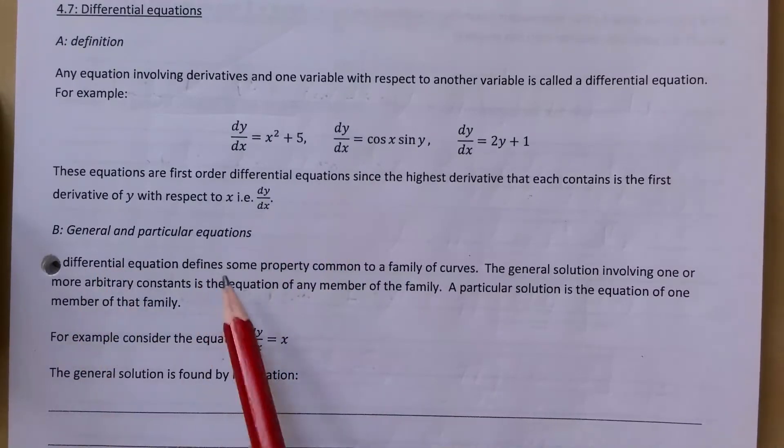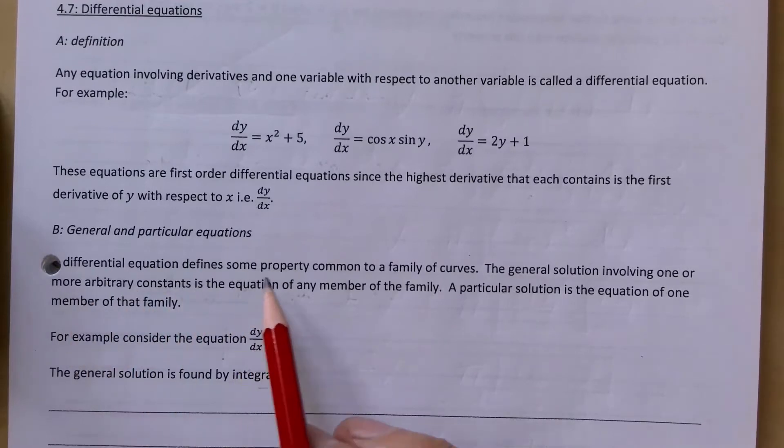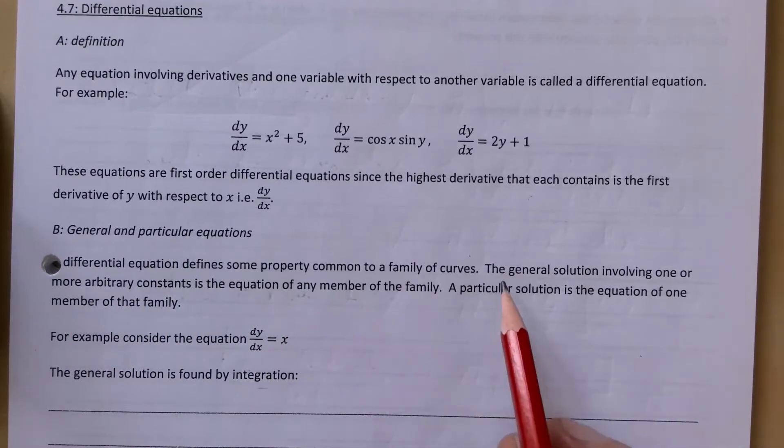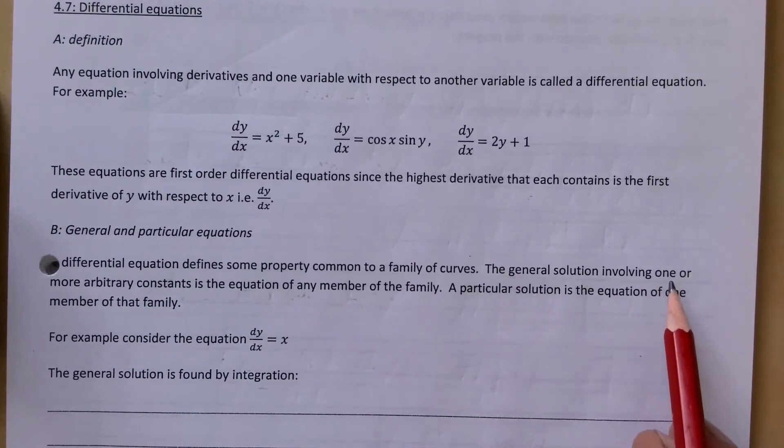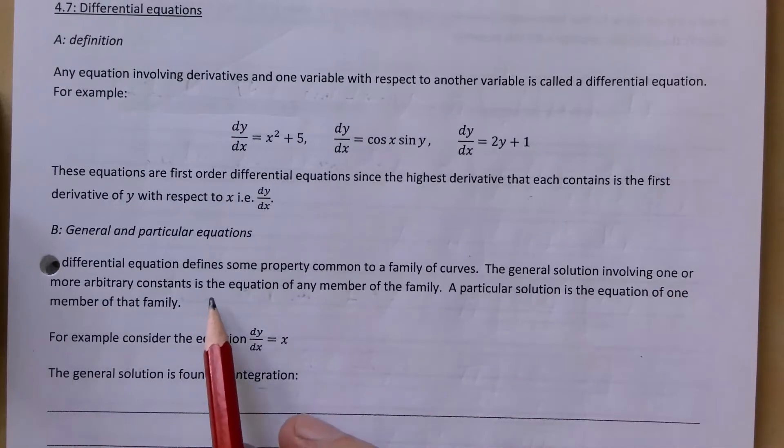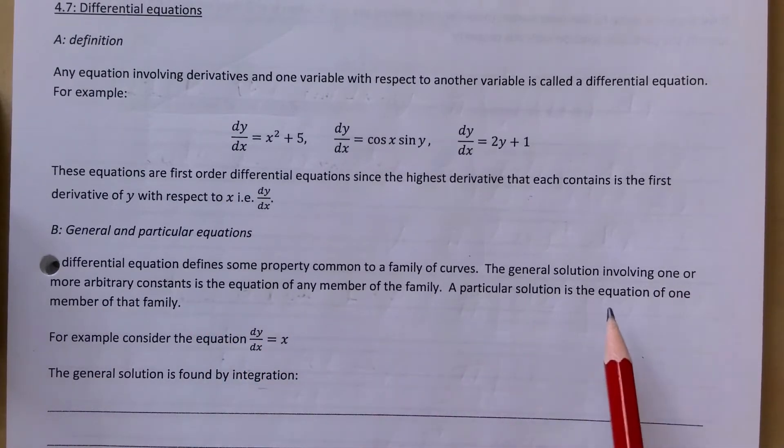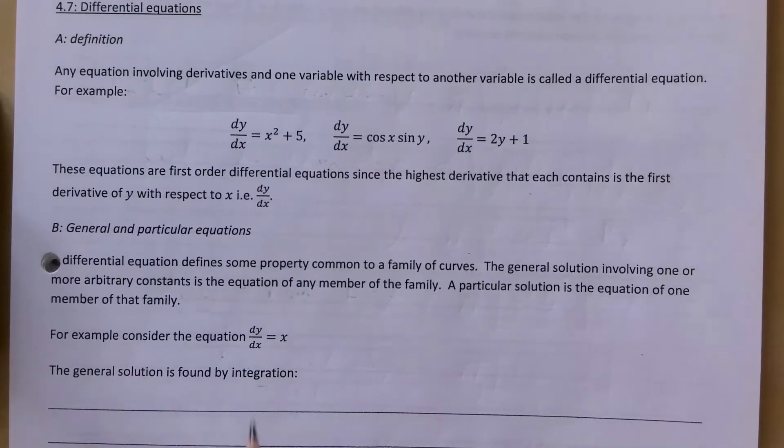General and particular equations: a differential equation defines some property common to a family of curves. The general solution involving one or more arbitrary constants is the equation of any member of the family. A particular solution is the equation of one member of that family.